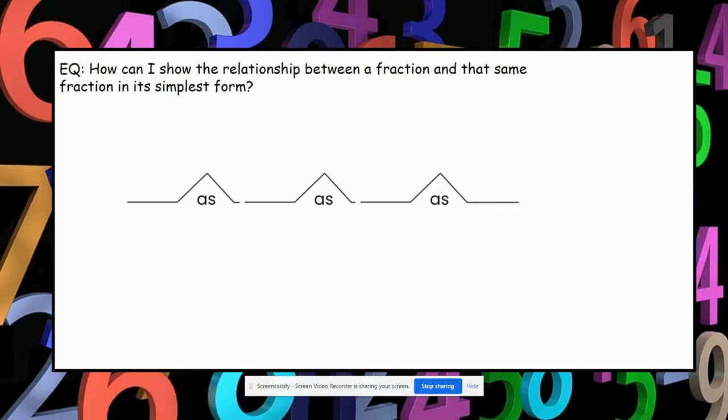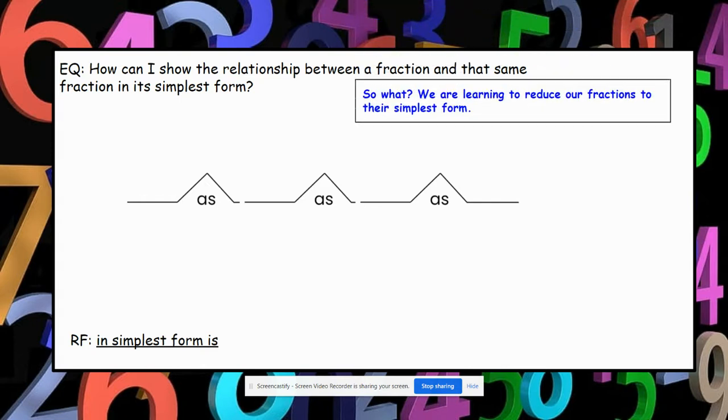The essential question is: How can I show the relationship between a fraction and that same fraction in its simplest form? Our relating factor for this bridge map is 'in simplest form is.' This is what we are doing – we are learning to reduce our fractions to their simplest form.